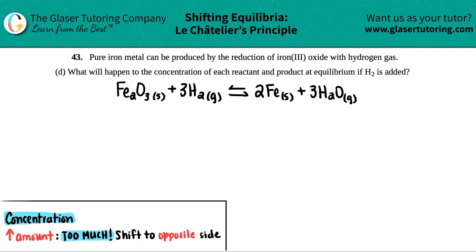Number 43: pure iron metal can be produced by the reduction of iron(III) oxide with hydrogen gas. Letter d asks: what will happen to the concentration of each reactant and product at equilibrium if H2 is added? So, Le Châtelier's principle - we're already on letter d now. Basically, what are we doing?